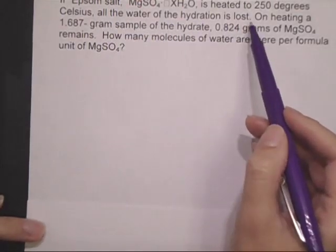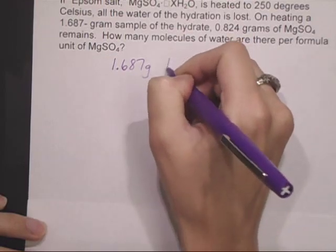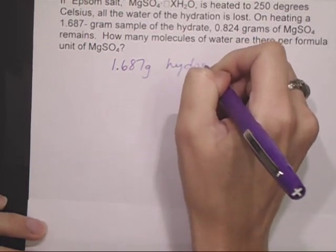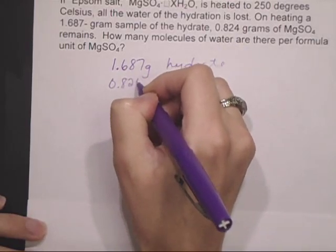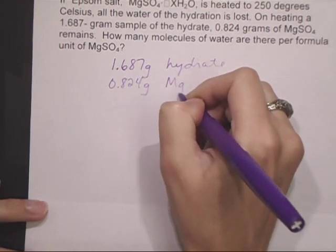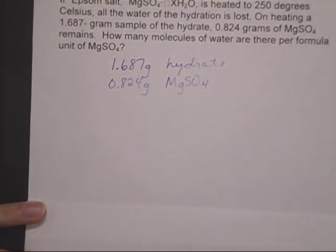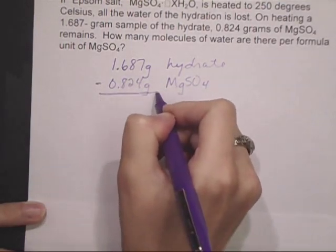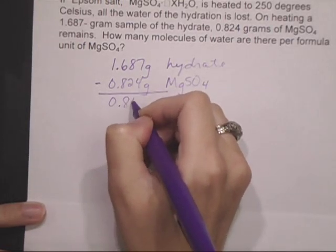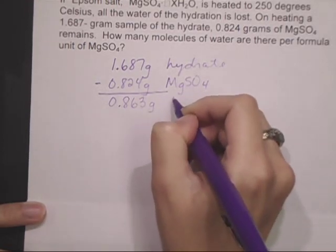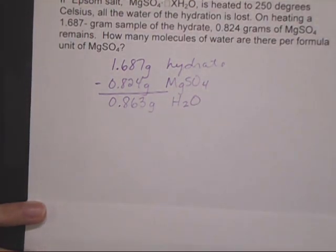Most materials can't hold it to melt it, so what you're doing here is you're losing the water. So all the water of hydration is lost on heating a 1.687 gram sample of the hydrated compound, and then it says at the end, 0.824 grams of just the MgSO4, the anhydrous, are left. If I take the difference between the two, then I have the water that was driven off.